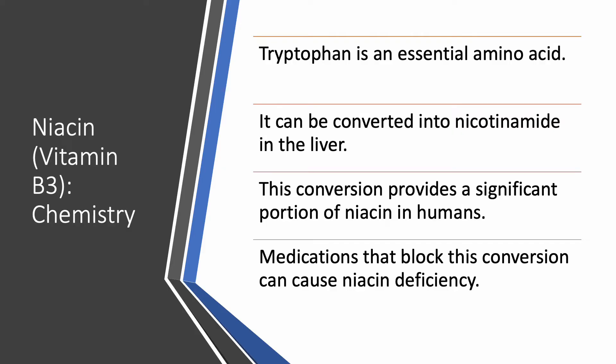The human body can make niacin from tryptophan. Tryptophan is an essential amino acid — there are eight or nine essential amino acids that our body cannot make and you need to get them from diet. Tryptophan can be converted to nicotinamide in the liver, though this is variable from person to person. It requires vitamin B6, and you need about 60 milligrams of tryptophan to get one milligram of niacin. This conversion provides a significant portion of niacin for humans. Therefore, if you are on a medication that blocks this conversion, you are going to be low on niacin.